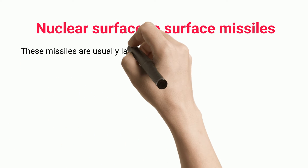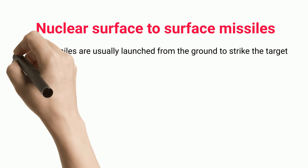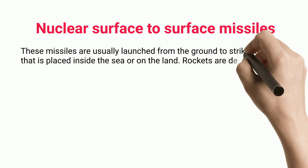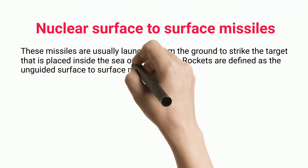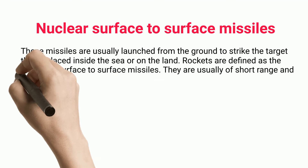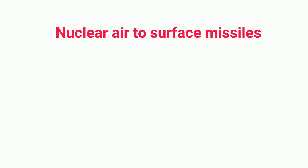Nuclear surface-to-surface missiles are usually launched from the ground to strike a target placed inside the sea or on the land. They are usually of short range and they use fins to operate.